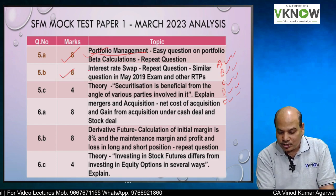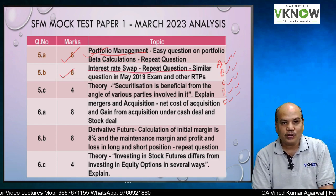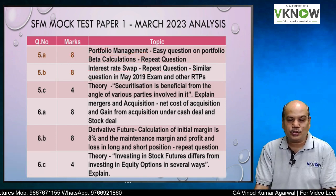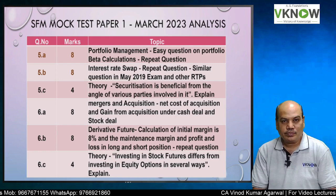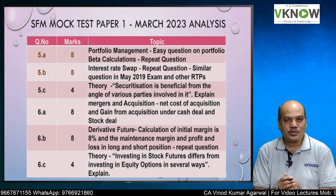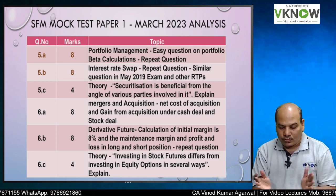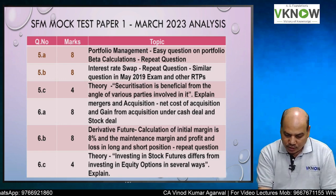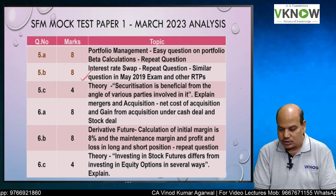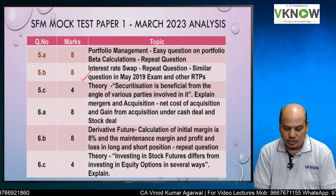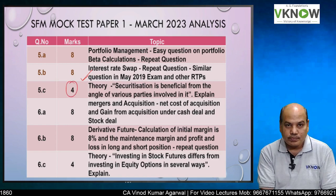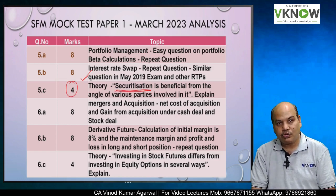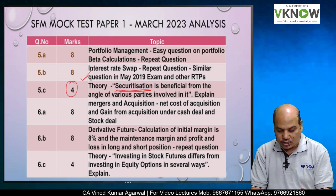Question 5B is again a highly repeated question on interest rate swap. One company wants to borrow at a floating rate and one wants to borrow at a fixed rate. You have to find out whether a swap is possible and then determine the effective cost to each party. We have done many such interest rate swap questions in class. Question 5C is a theory question on securitization: securitization is beneficial from the angle of various parties involved — explain.